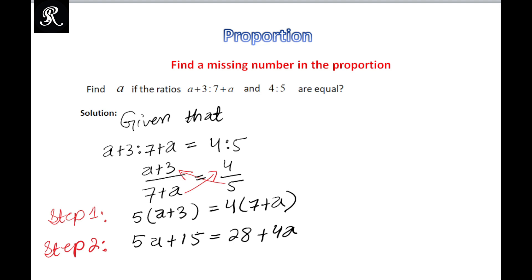Here we'll do the same. We need to shift the like terms on the same side. So here we will shift this 4a to this side. For that we need to subtract 4a on both sides of the equation.